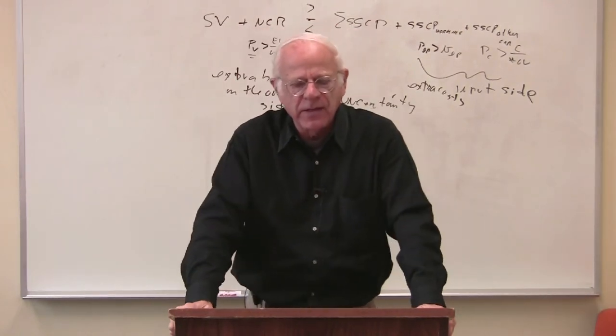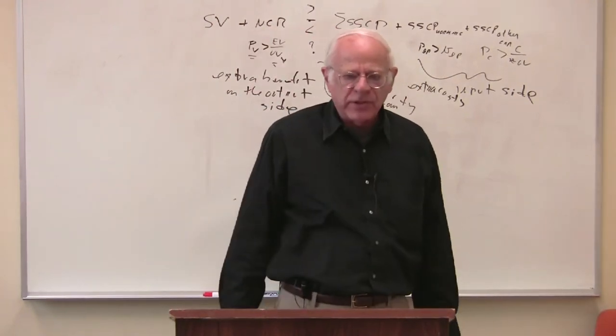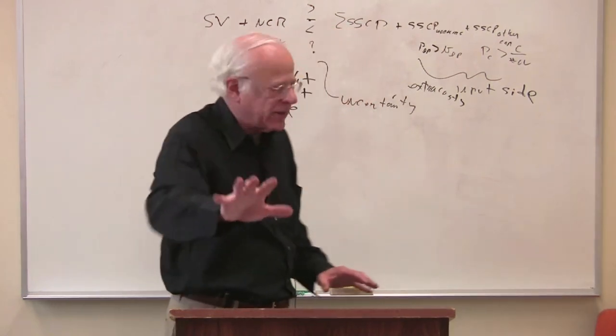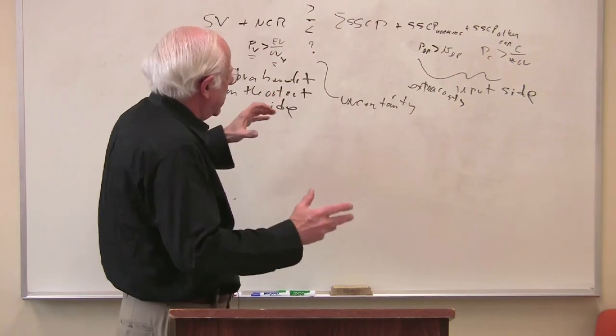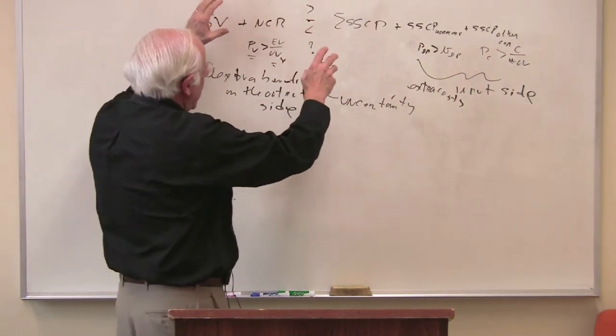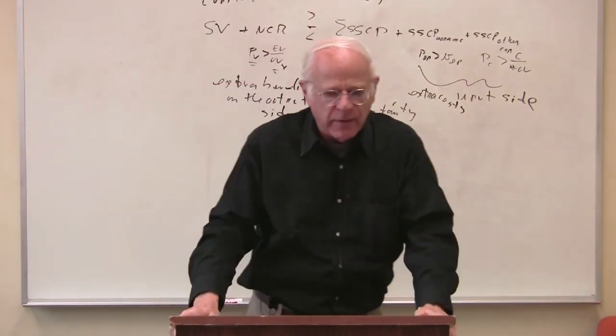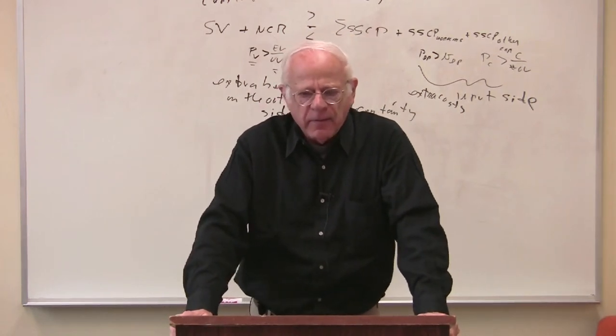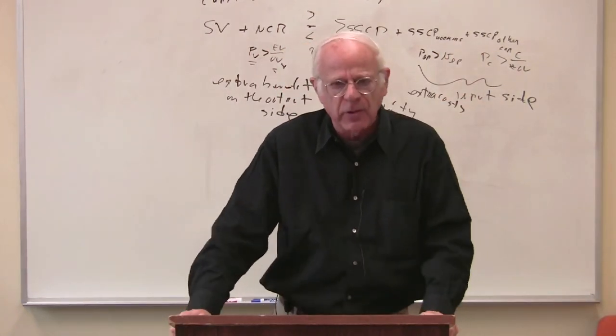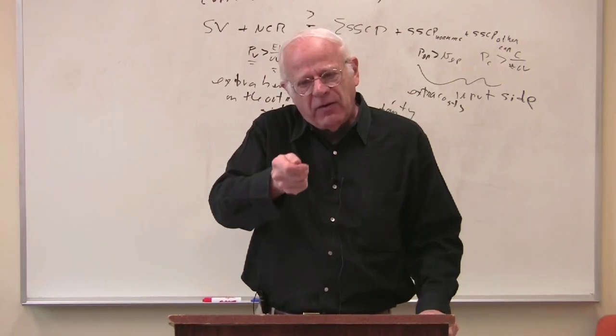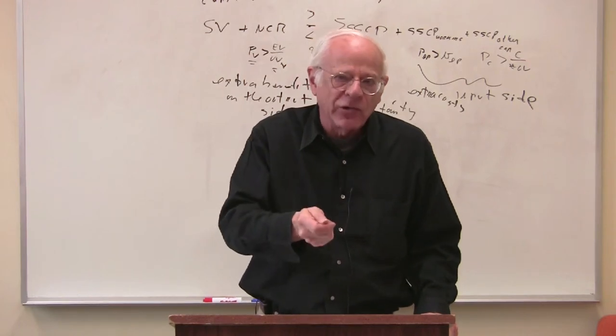Keynes summarized these variety of different events as animal spirits. And the animal spirits in society could push the capitalists to decrease K star. Let me give you an example of this. Suppose it were the case that the inequality was going this way. So that the capitalists were benefiting more on the output side from rising incomes than they were paying on the cost side. So things look pretty good.